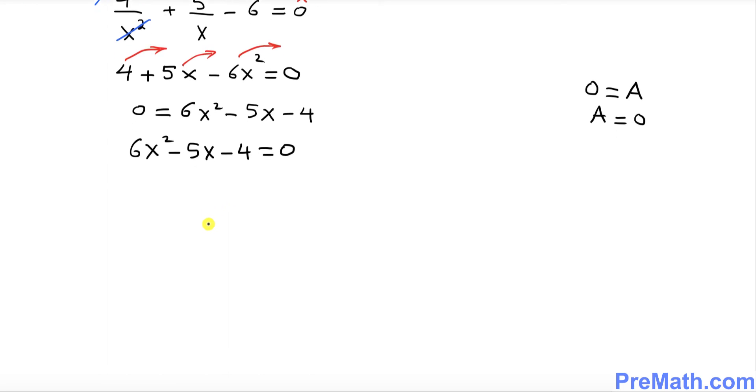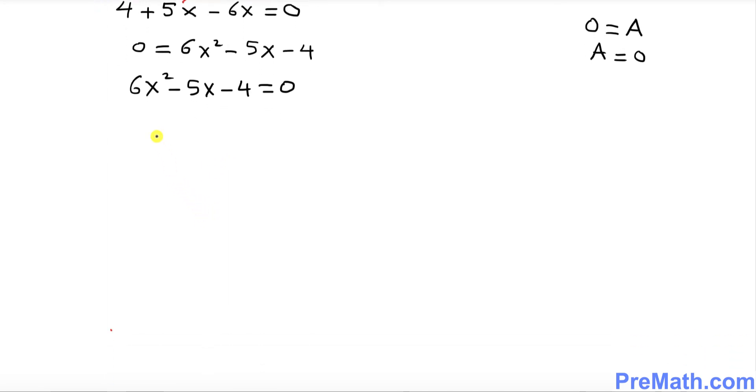This is a quadratic equation and we want to solve it by simply factoring. The possible factors are 3x minus 4 and the next factor is 2x plus 1.